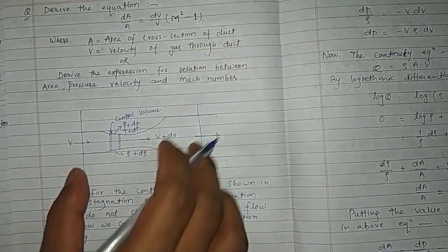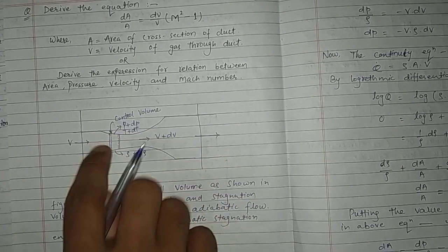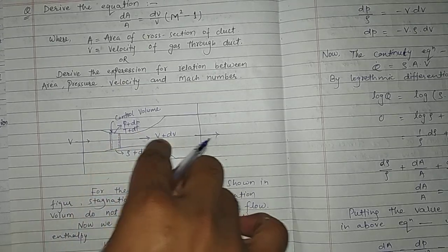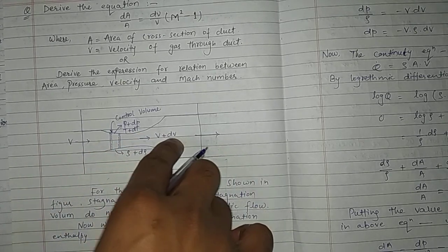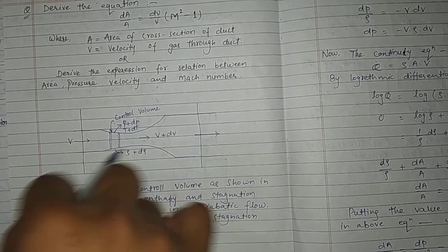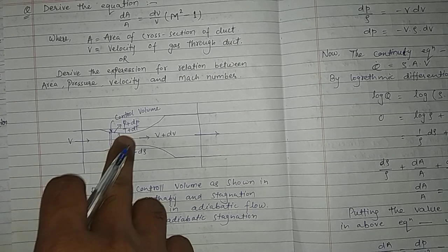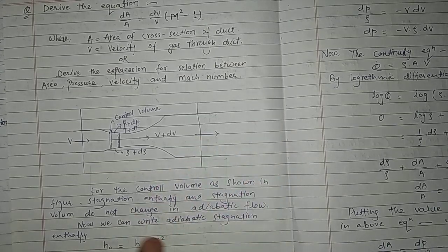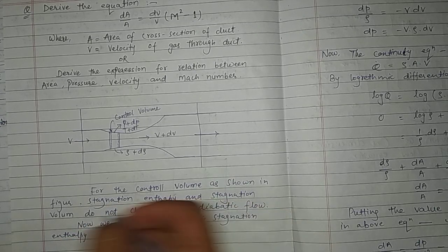First of all, we will take a small figure — a small control volume. On one side we have P, T, V, and rho; on the other side P plus dP, T plus dT, velocity V plus dV, and rho plus d-rho. This is velocity, pressure, area, and temperature for the control volume shown in the figure.